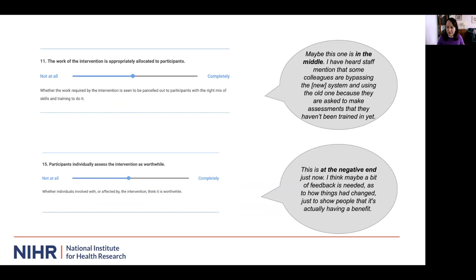To show some examples: question 11 on collective action prompts a discussion about how work is allocated under a new assessment pathway. The comment shows that not all staff working with the pathway have acquired the necessary skills yet to make full assessments. Discussion about question 15 from the reflexive monitoring construct highlights that staff don't currently have access to any feedback about the impact of their efforts, and addressing this might improve engagement with the new process. What's key here is not the scoring as such, but the thought processes, analysis and discussion that the items generate around an implementation activity.